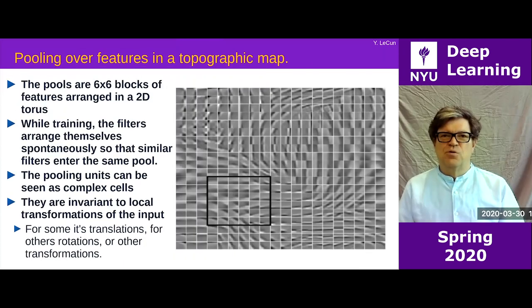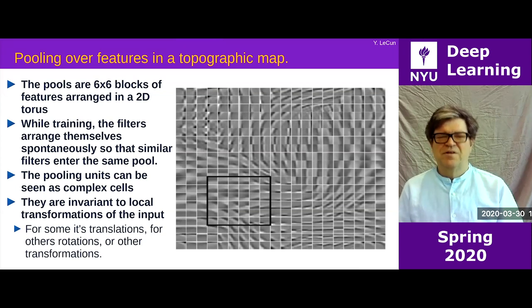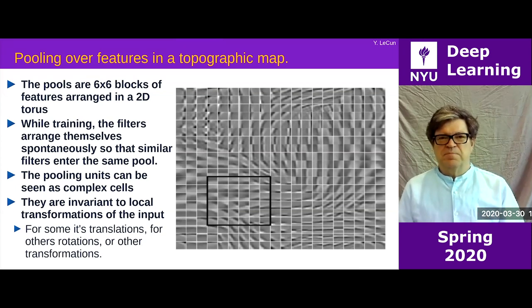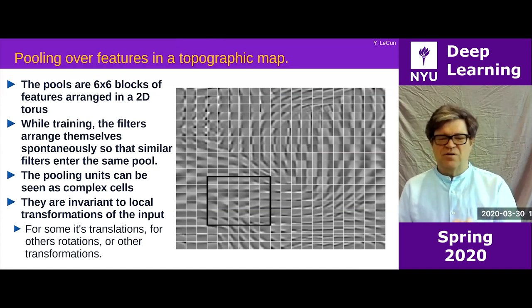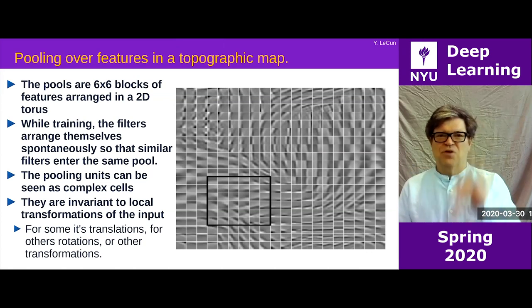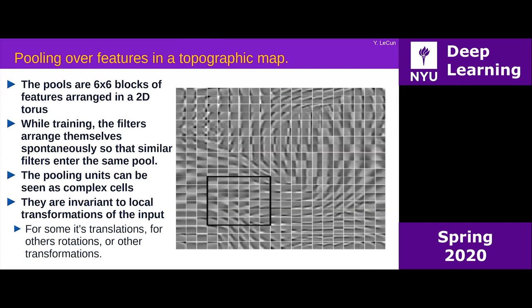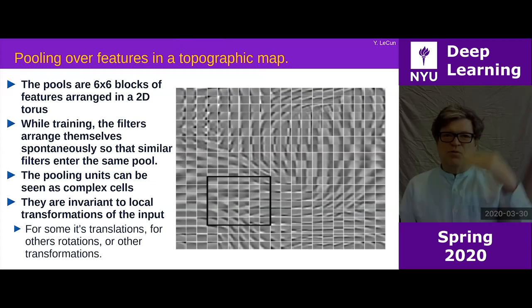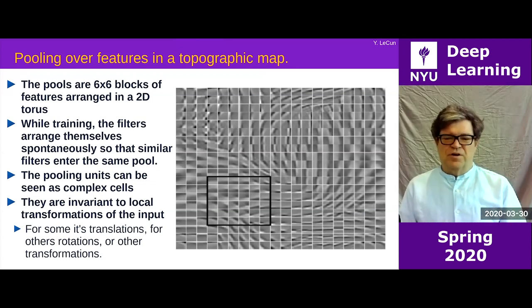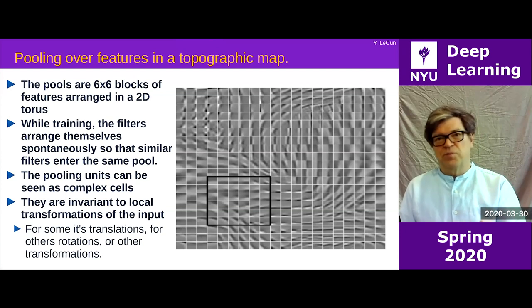Here P_j is a group of 36 components of Z that happen to be neighbors in this topology. That's one P, and the next P is a similar 6 by 6 square shifted by three pixels to the left, top, or bottom. The overlapping between the groups is what represents this topology.